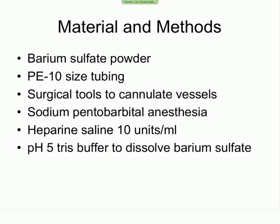Coming to the materials and methods: I'm using barium sulfate powder, which you can get anywhere — it's the cheapest thing you can get, costing less than $20. And PE-10 size tubing, surgical tools to cannulate the vessels, sodium pentobarbital anesthesia, heparinized saline at 10 units per ml, and pH-5 buffer, which is an acidic buffer to dissolve the barium sulfate, as barium sulfate is to some extent dissolved in acidic solutions.